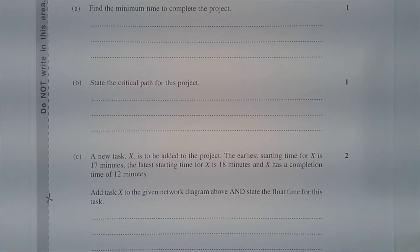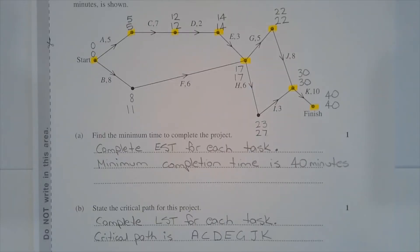Part B: State the critical path for this project. The critical path for this project may be found by completing the latest start time or LST for each task. Starting from the finish and working backwards, from the 40 minute mark, subtracting 10 we get 30.